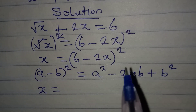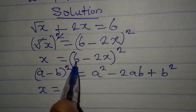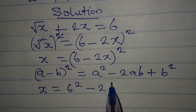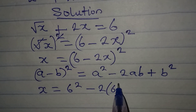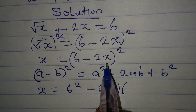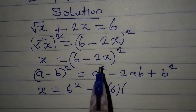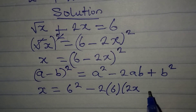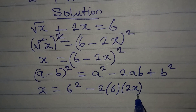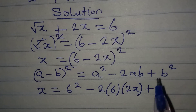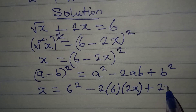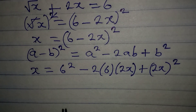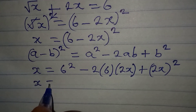So x will be equal to: in place of a squared we have 6 squared, then minus 2 times a times b — where a is 6 and b is 2x — so we write 2 times 6 times 2x, then plus b squared which is (2x) squared.